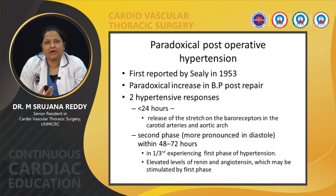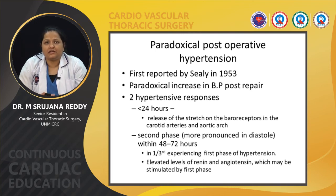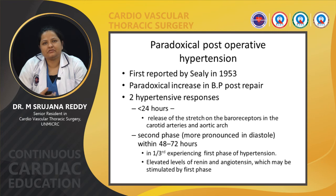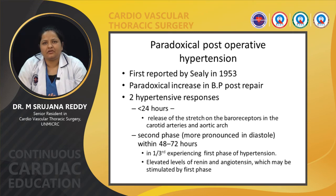One specific complication is paradoxical postoperative hypertension. This syndrome with paradoxical postoperative hypertension and abdominal discomfort was first reported by Sealy in 1953. There is a paradoxical increase in BP post repair. The first hypertensive response is seen within 24 hours and usually subsides within 24 hours, due to sudden stretch release from baroreceptors in the carotid arteries and aortic arch, leading to a sudden increase in sympathetic response.